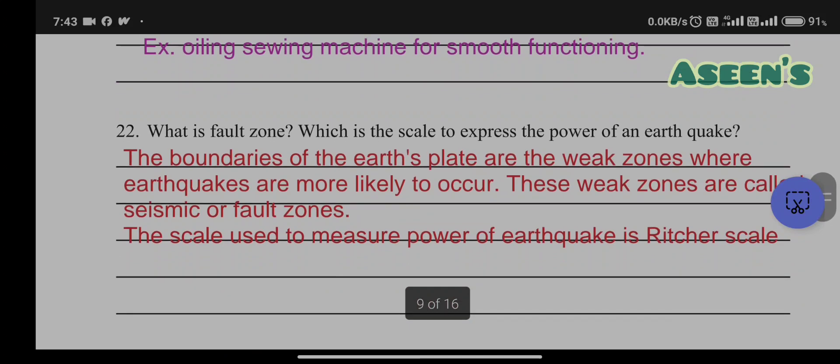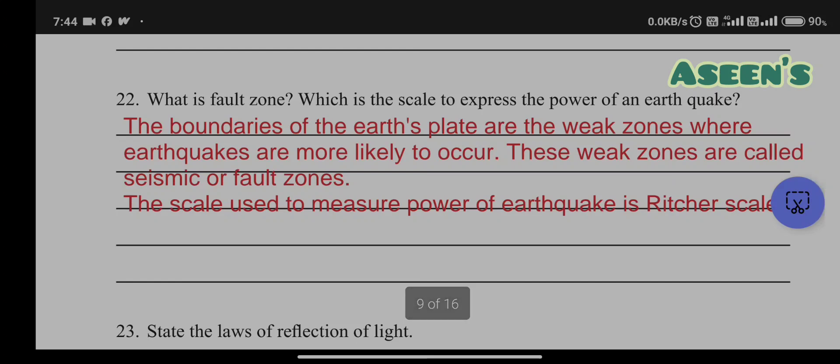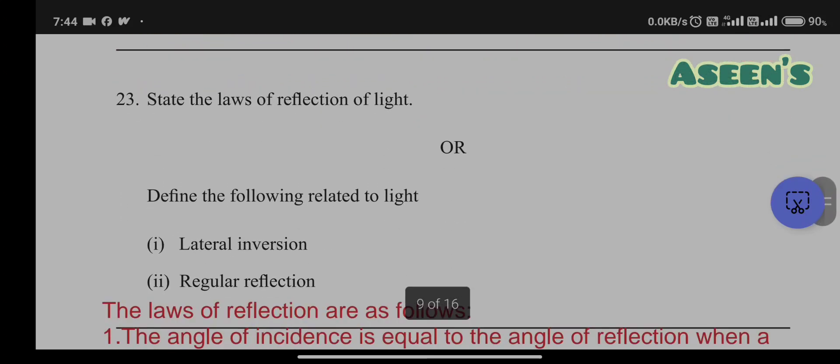Question 22: What is fault zone? What is the scale to express the power of an earthquake? Boundaries of the earth's plates are weak zones where earthquakes are more likely to occur. These weak zones are called seismic or fault zones. Fault zones and seismic zones are one and the same. The scale is Richter scale.